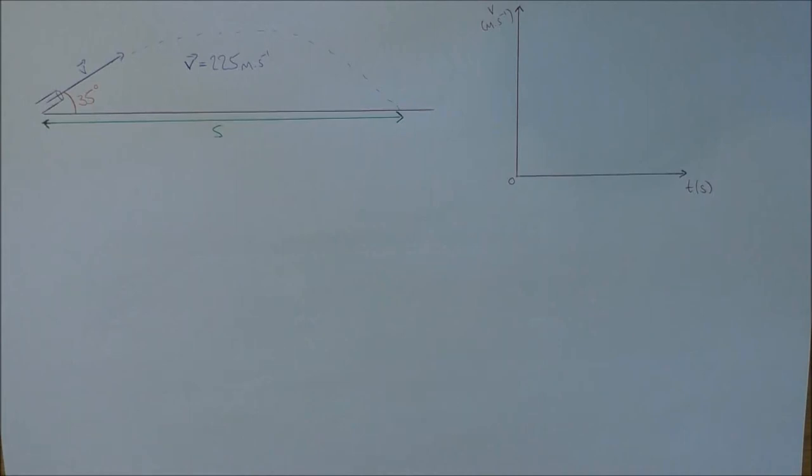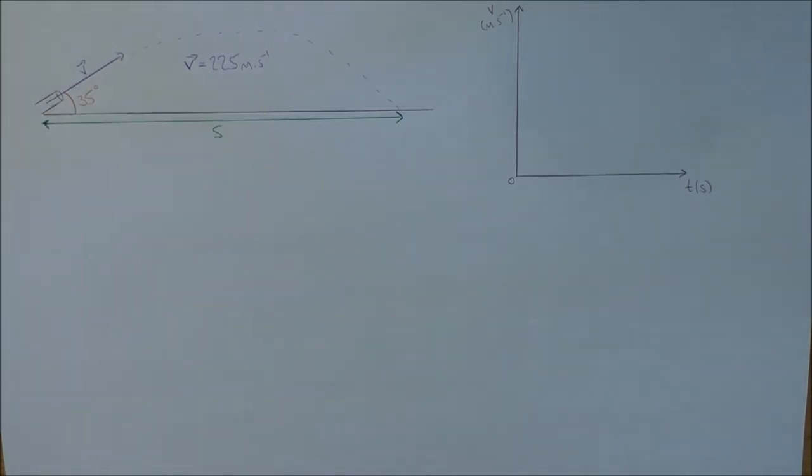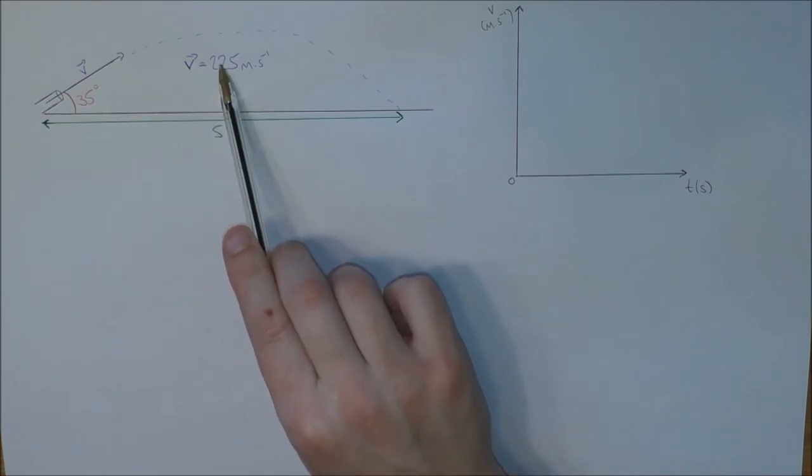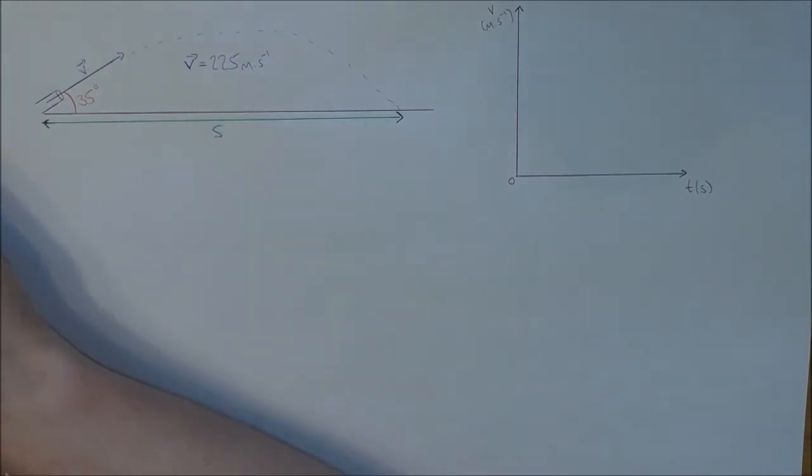Okay, so this is projectile motion example number two: firing a cannon from the floor along level ground at an angle. We are given the angle that's been fired at and we're given the muzzle velocity of the projectile. We're trying to find the horizontal distance that it's going to travel.